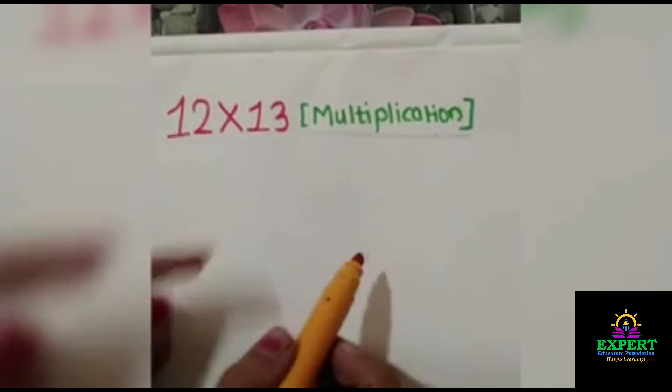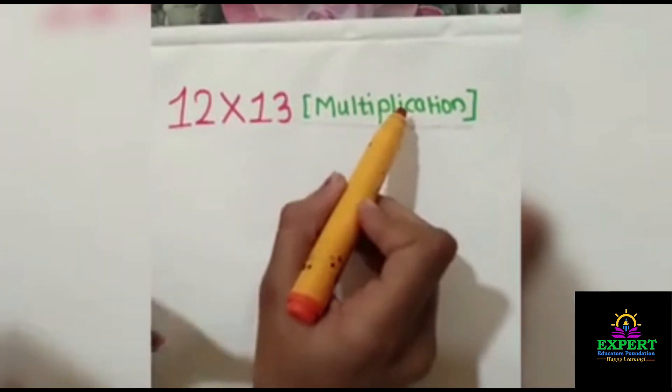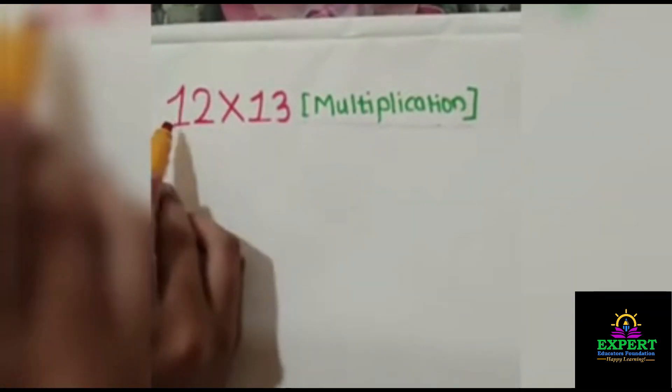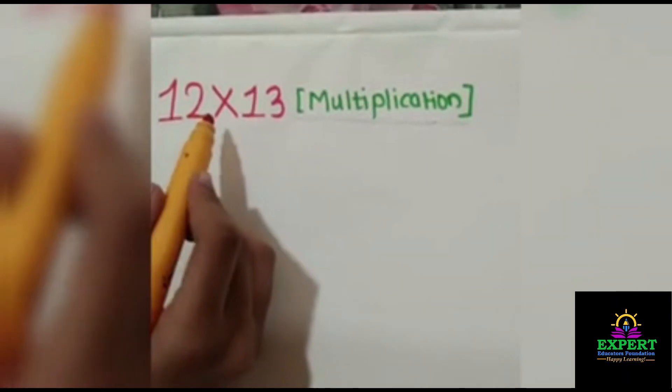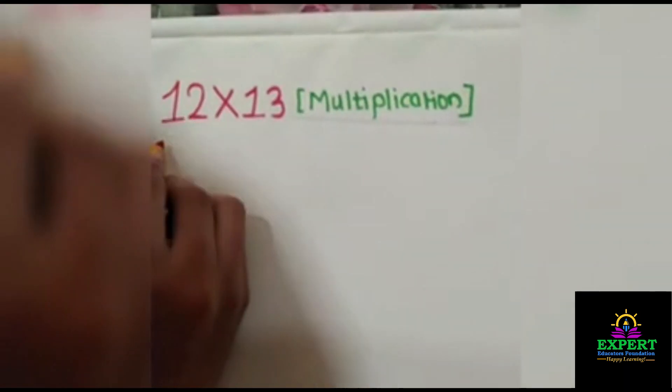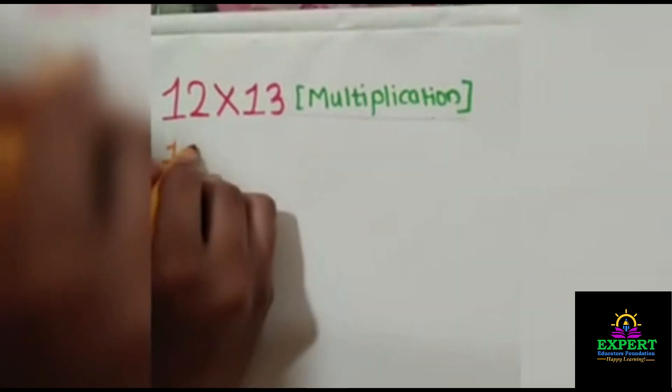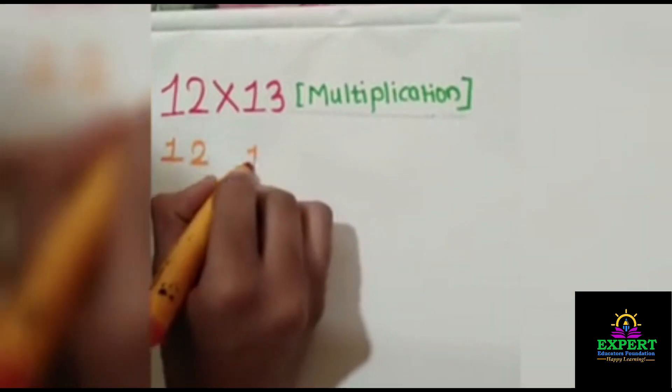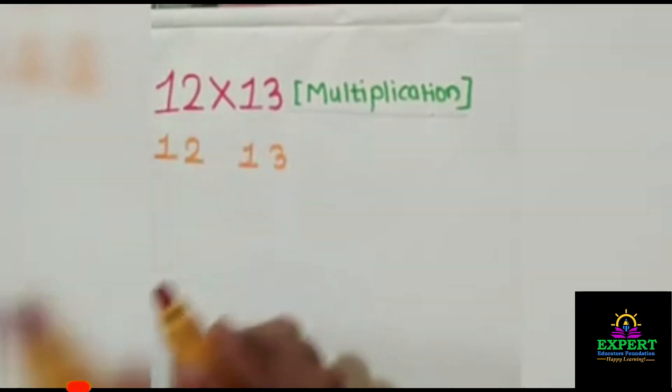Now guys, the next trick is the multiplication of 2 digits. So here I have taken 2 digits which is 12 multiplied by 13. So let me separate the numbers: 1, 2 and 1 and 3.